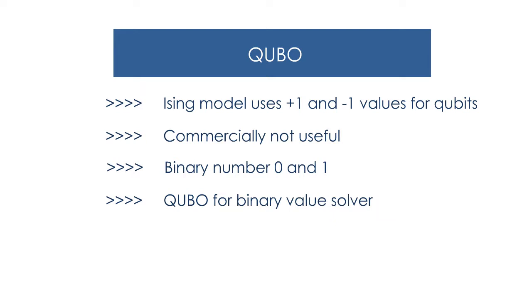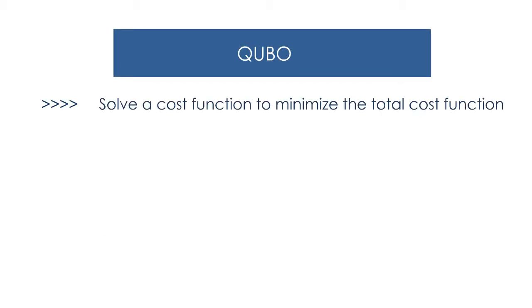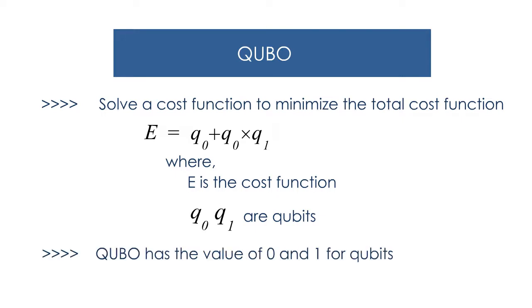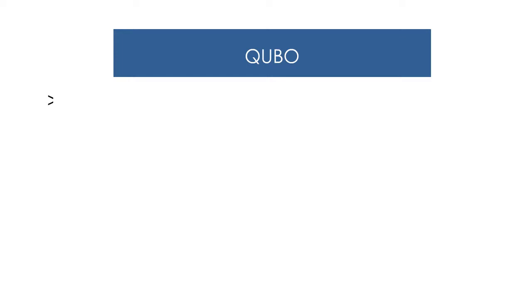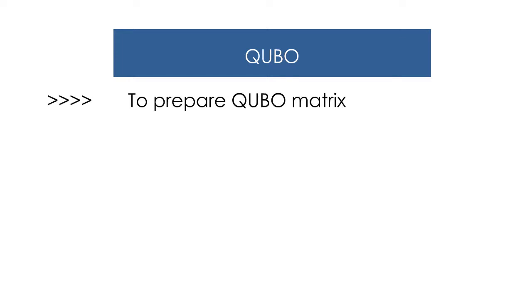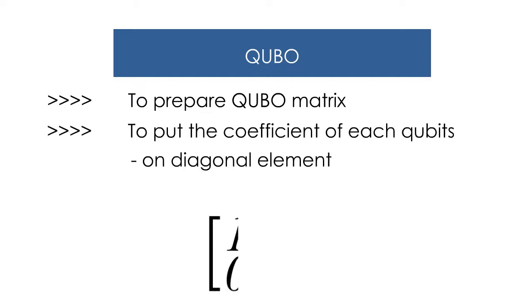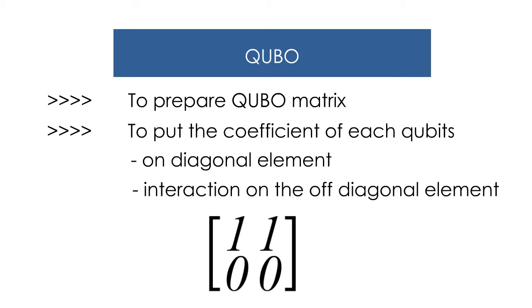Today we'll be talking about the QUBO matrix. We are going to solve a cost function to minimize the total cost. Here E is the cost function, and q0 and q1 are qubits — QUBO uses values of 0 and 1 for qubits. To solve QUBO, we prepare a QUBO matrix by putting the coefficient of the equation on the matrix: coefficients of each qubit go on the diagonal elements, and interactions go on the off-diagonal elements.